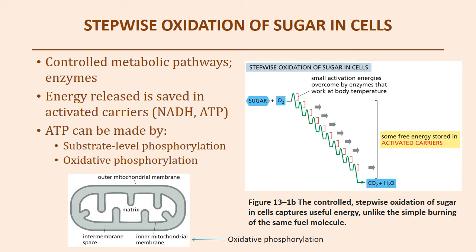By proceeding with the catabolic breakdown of our glucose molecule in a step-by-step process, we can utilize different enzymes to catalyze each reaction, generating small, controlled energy releases. While there will always be some heat lost due to the second law of thermodynamics — energy transfer is never 100% efficient — breaking it into smaller steps allows us to capture free energy using activated carriers, which can then be used to drive energetically unfavorable reactions.